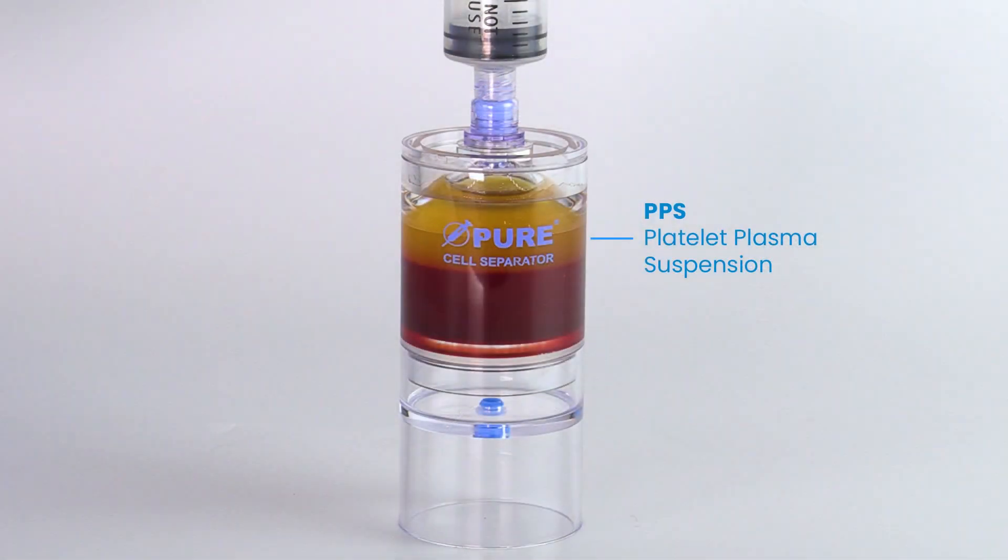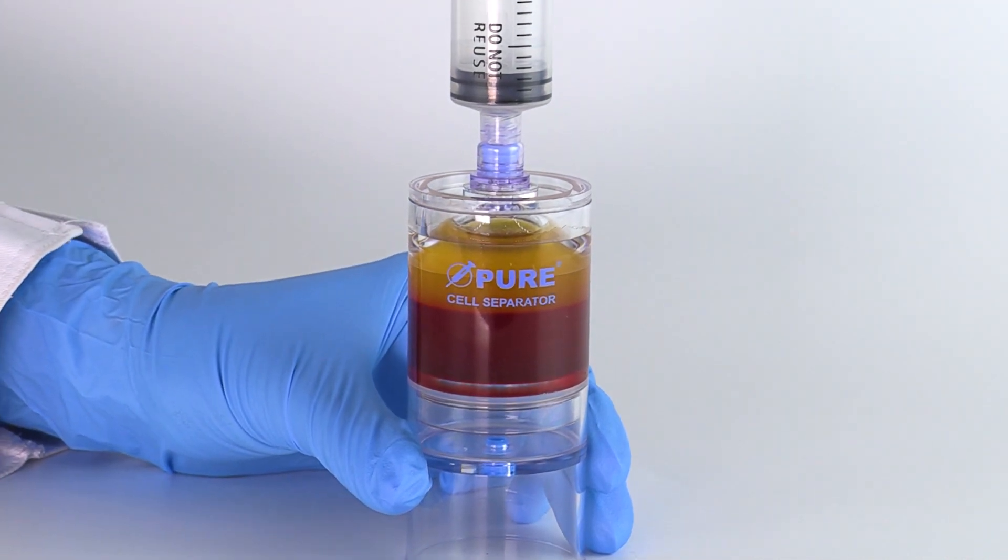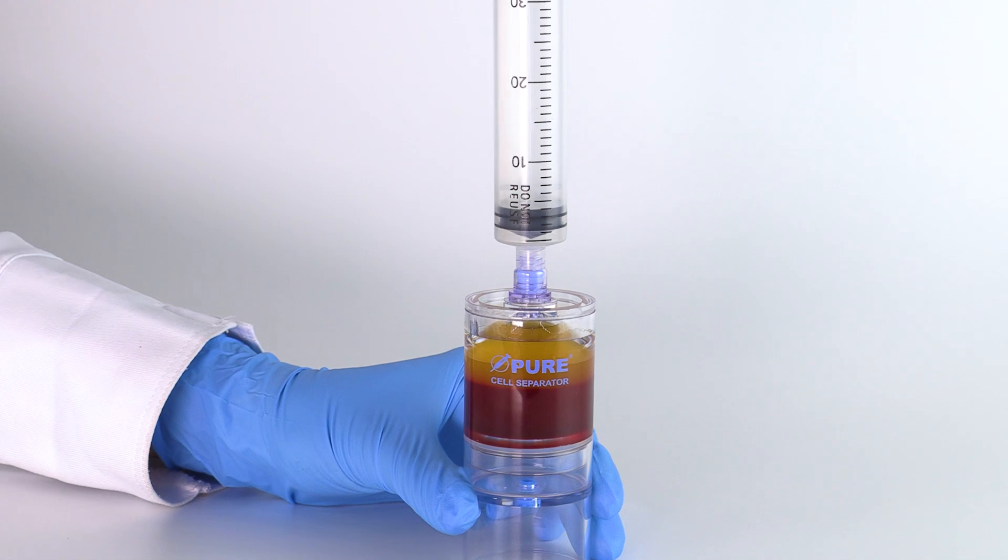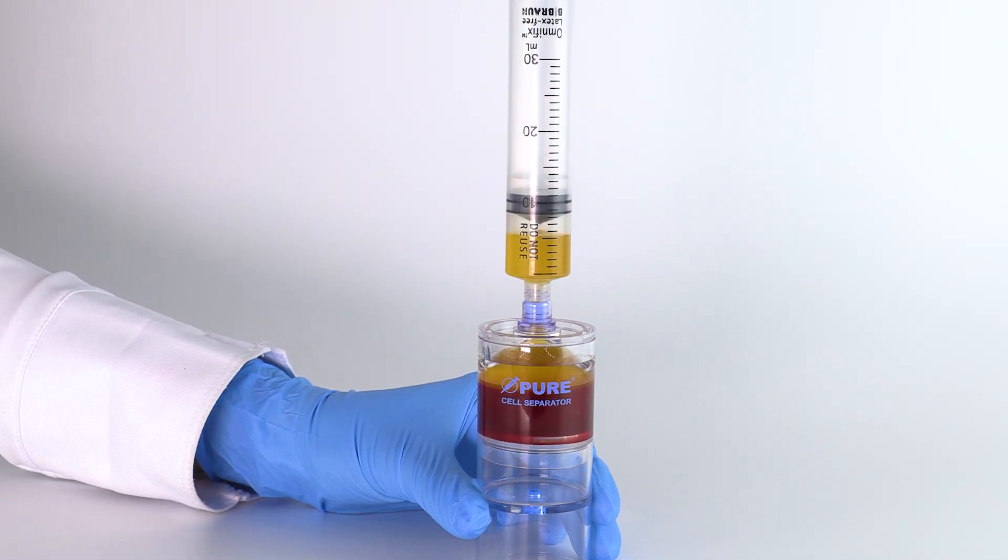After centrifugation, the platelet plasma suspension, or PPS, will be separated above the red blood cell layer. Attach a sterile syringe to the top port and aspirate the platelet plasma suspension.